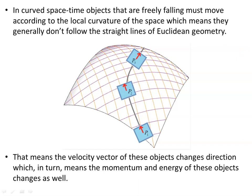In curved spacetime, objects that are freely falling — that's following the curvature of spacetime, not acting under any force or being prevented from moving in any way — must move according to the local curvature of the space, which means they generally don't follow the straight lines of Euclidean geometry.